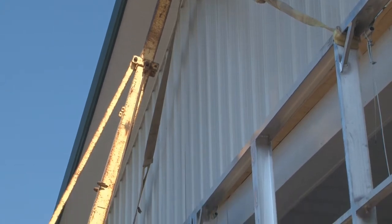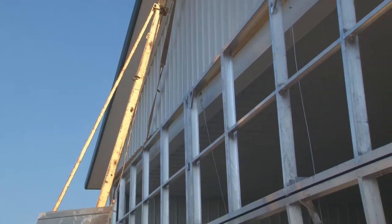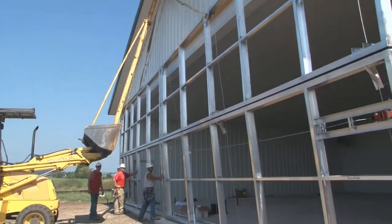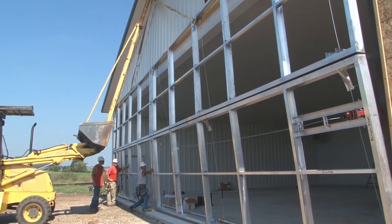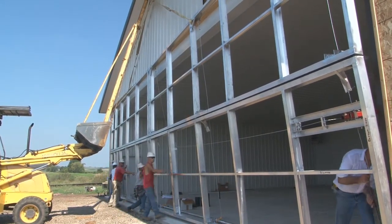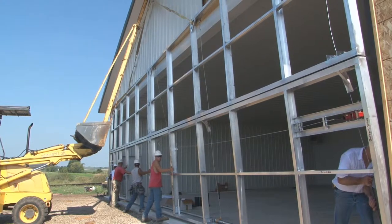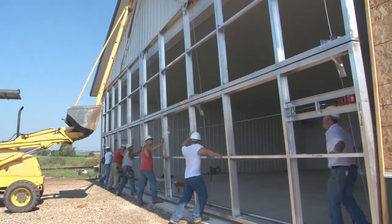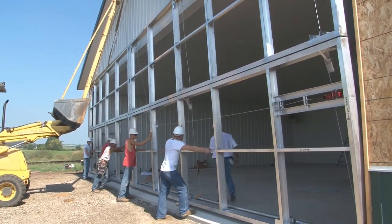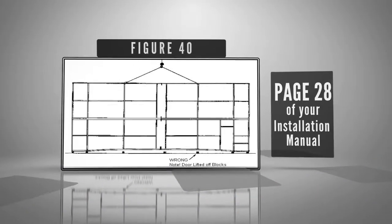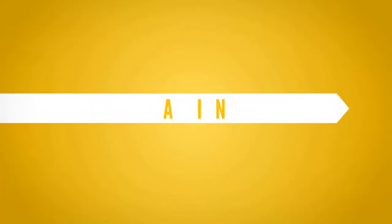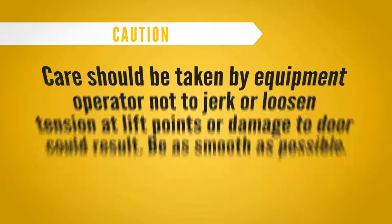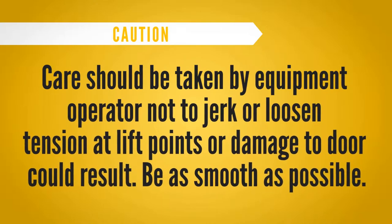If lifting by hand, lift from center of the door. If by forklift or crane, spread lifting points a reasonable distance for the span of the door, but stay next to the verticals and lift and move in towards the building at the same time. Watch bottom cord of door. If it lifts off blocks at center, you're lifting too much and should move in toward building. See figure 40. Caution: Care should be taken by equipment operator not to jerk or loosen tension at lift points or damage to door could result. Be as smooth as possible.